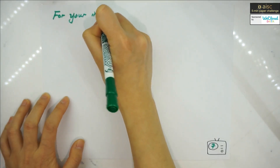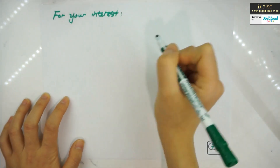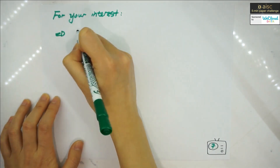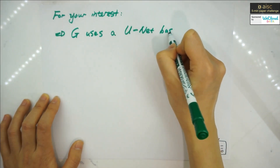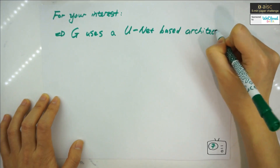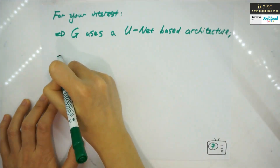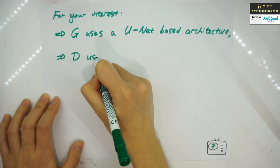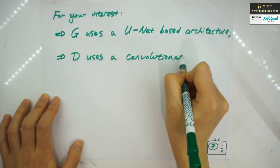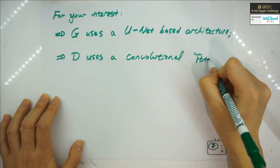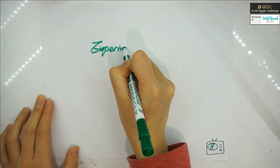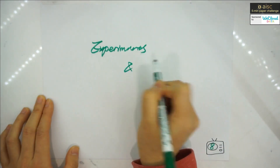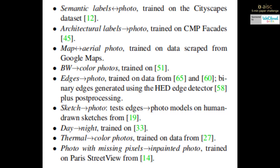For the conditional GAN model architecture, the generator uses a UNet-based architecture, while the discriminator uses a convolutional PatchGAN classifier.